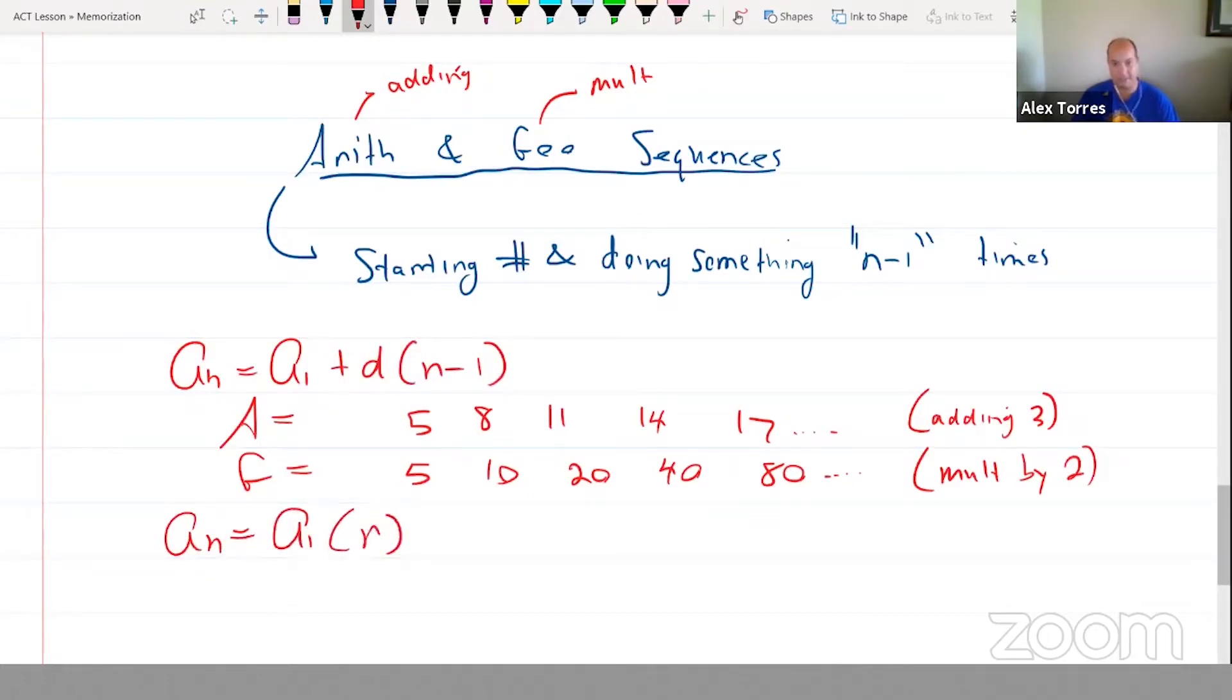So what does d stand for? It's the common difference. It gets at the idea that the thing you're adding, you could figure it out by subtracting. If I wanted to know what we were adding here, if it were a harder thing to figure out, I would say 17 minus 14. So when you're adding, you subtract to figure out. That's why the thing that you're adding is called the common difference.